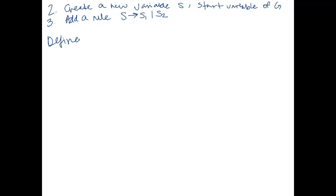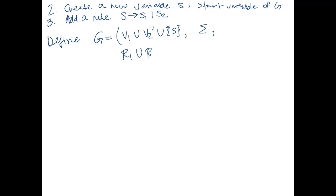We then define G. Its variables are all variables from G1, plus all variables from G2 after replacement (V2'), plus the new start variable S. The terminals are sigma. The rules are all rules from G1 (R1), plus all rules from G2 after replacement (R2'), plus the new rule S → S1 | S2. The start variable is S.